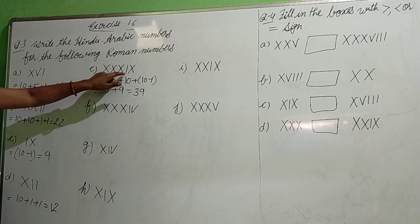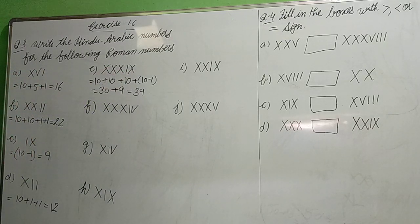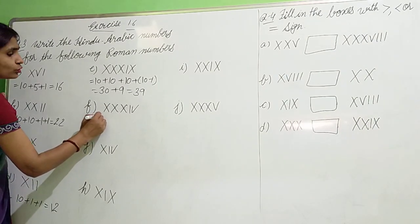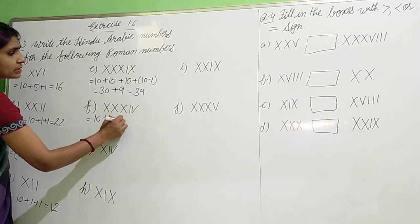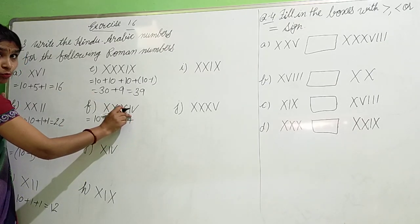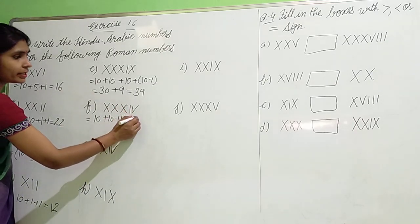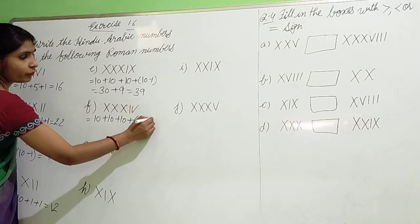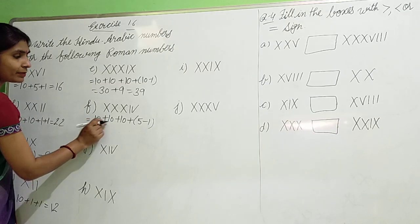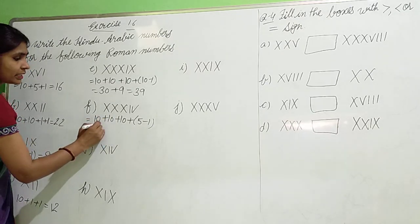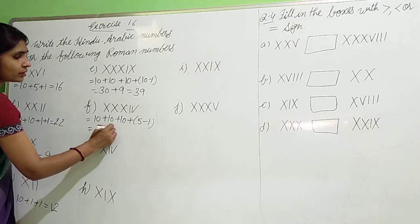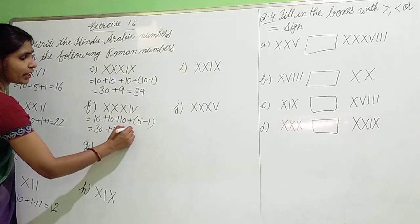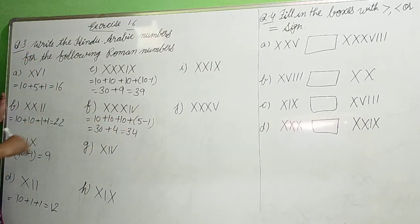Next part: X, X, X — three times — 10 plus 10 plus 10, and then IV which is subtraction: 5 minus 1 equals 4. So 10 plus 10 plus 10 is 30, plus 4 equals 34. Understand?